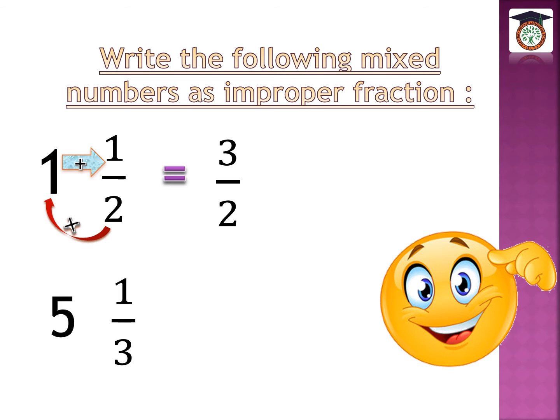Let's take another example: 5 and 1 over 3. I want to change this mixed number to an improper fraction. Who can remember the first step? We multiply: 3 times 5 equals 15. Then 15 plus 1 equals 16. So the answer is 16 over 3.